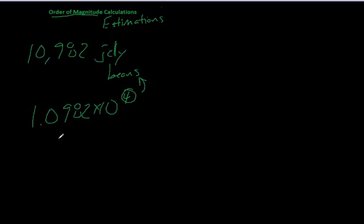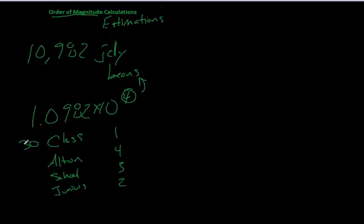In other words, if I were looking at just our class alone, the order of magnitude would be 1. If I were looking at Alton, the order of magnitude would be around 4. If I were looking at the school, the order of magnitude would be 3. And if I were looking at juniors, the order of magnitude would be 2. I estimated in a class there's roughly 30 kids. Even if it's 27 or 35, the order of magnitude is still going to be correct in 1.